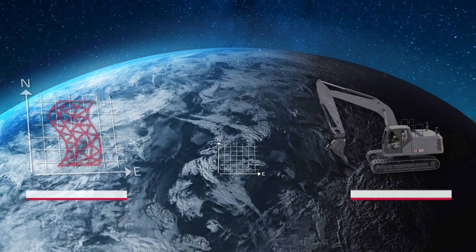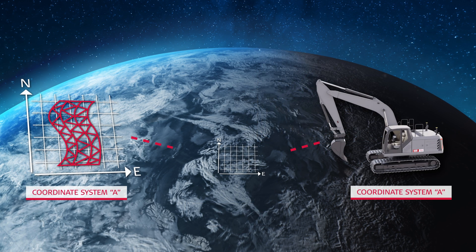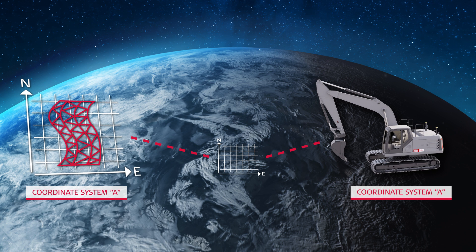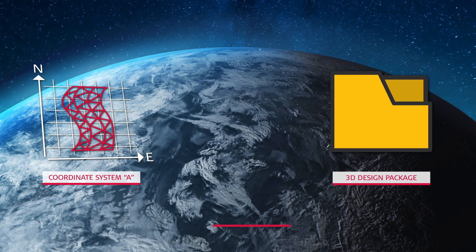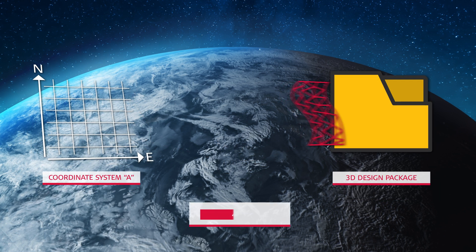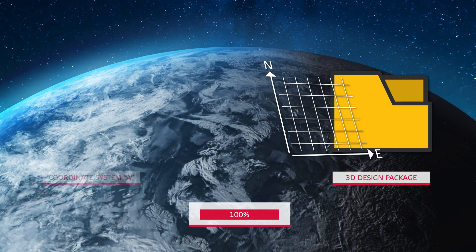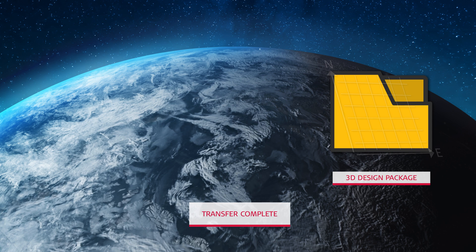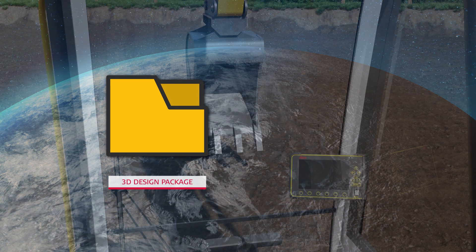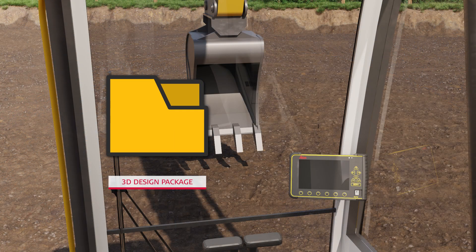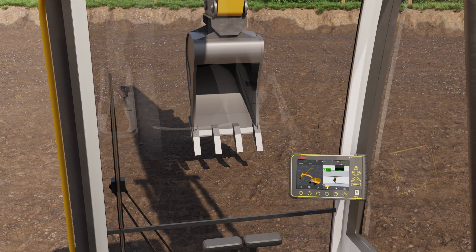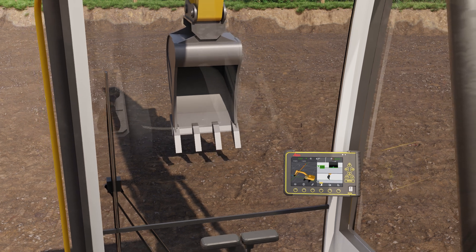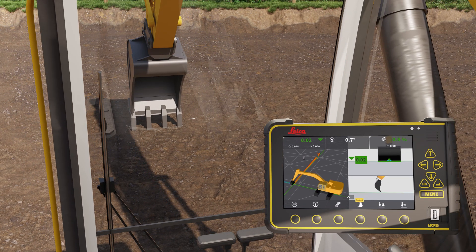We must use the exact same coordinate system in the 3D machine control system. Many users include the coordinate system files as part of the 3D design project package. When you load the project package to the machine control system, you will see the 3D design on the machine control panel and exactly where you are in the design.